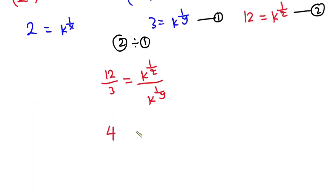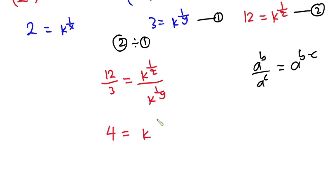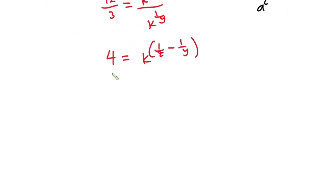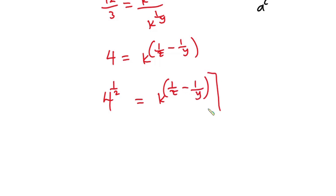12 divided by 3 is 4, and this is equal to k to the power 2. Now from indices, if I have a to the power b over a to the power c, this is the same as a to the power b minus c. So I can write the right-hand side as k to the power 1 over z minus 1 over y. Now let's raise each side of this equation to the power 1 over 2, giving us 4 to the power 1 over 2 equals k to the power 1 over z minus 1 over y, all to the power 1 over 2.